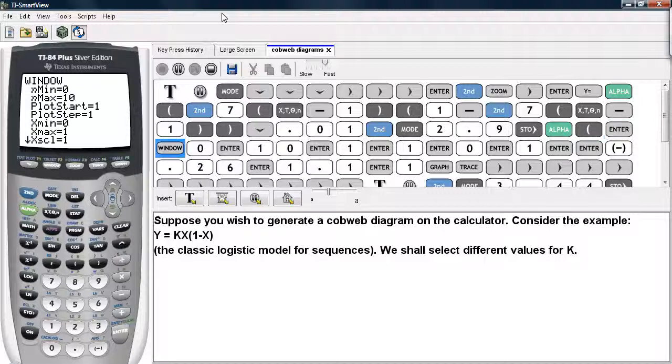And now we'll adjust our window so that n min is zero and x max or n max will be ten. We'll set plot start to be one and plot step will be one and x min will be zero and then x max will be one.